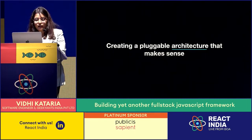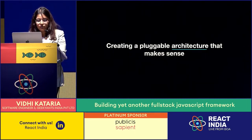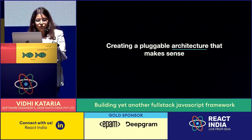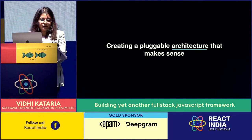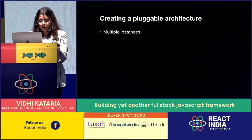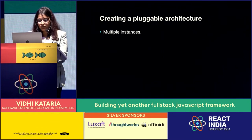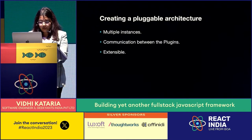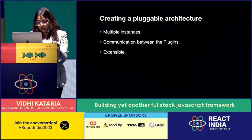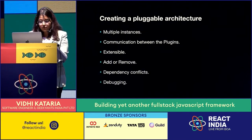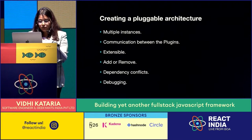The first challenge was creating a pluggable architecture that makes sense. This plugin system is very similar to what was shared in another talk today. Here are a few things we expect from a pluggable system: a plugin can have multiple instances; plugins should be able to communicate between themselves; it should be extensible so you can create your own plugin as required; adding and removing plugins should be simple; handling dependency conflicts between plugins; and most importantly, debugging should be easy. We had to build a robust plugin system because all plugins will follow this.